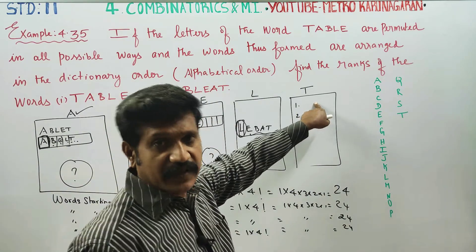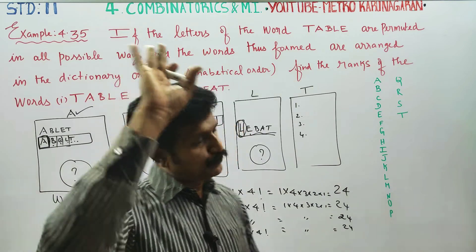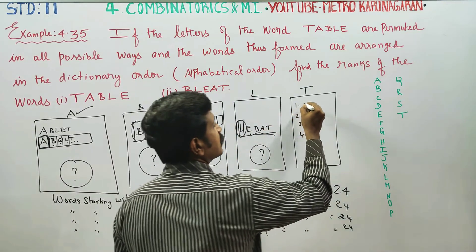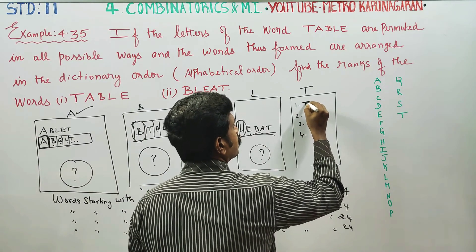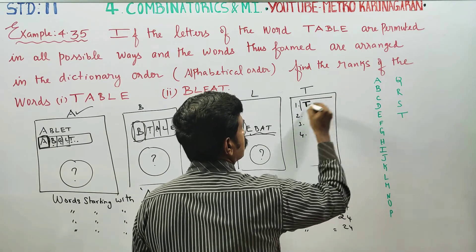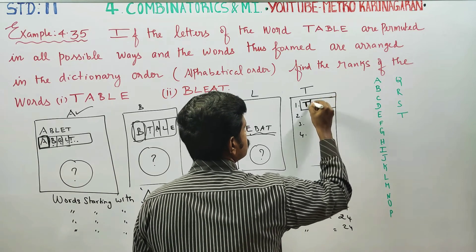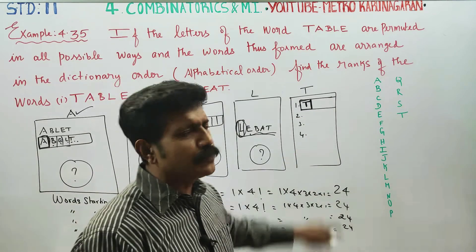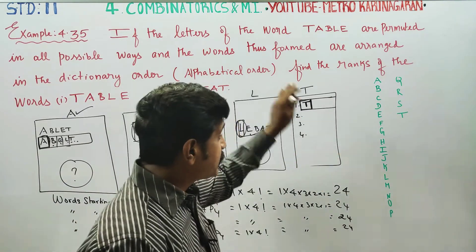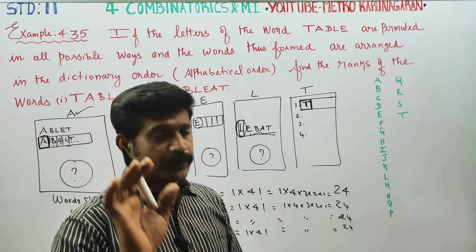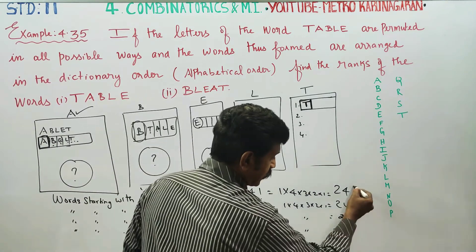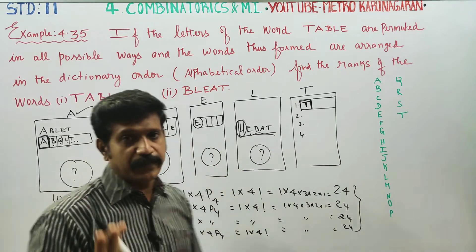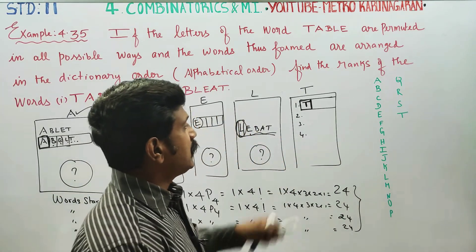5th page: now T is locked. T is the first letter of TABLE. We already have 4 pages of 24 words each. Table letters must be arranged carefully in alphabetical order within T.